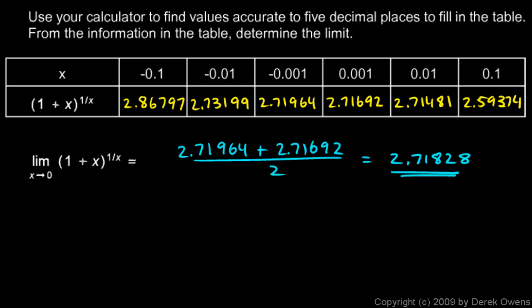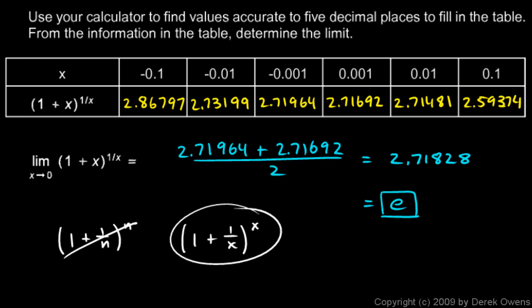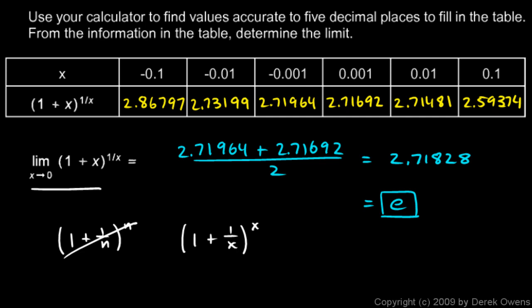That number should ring a bell — it's e, and that is in fact the answer to this problem. You may recognize a similar expression from precalculus or algebra 2: e is defined as one plus one over n, raised to the power of n, as n approaches infinity. If we rewrite that with x: one plus one over x to the x approaches e as x approaches infinity. In our expression, we have the reciprocals — x in place of 1/n and 1/x in place of n — so instead of x approaching infinity we have x approaching zero, and we still get e.